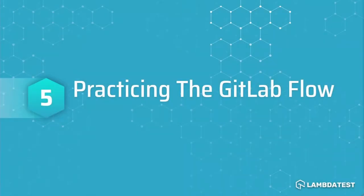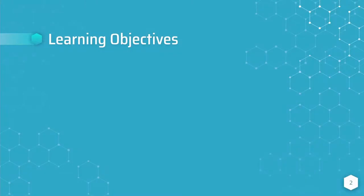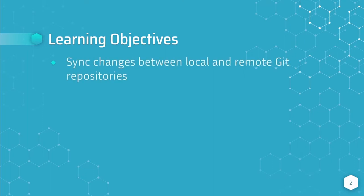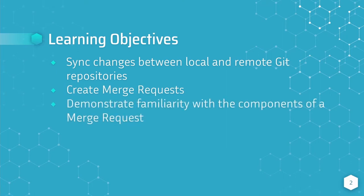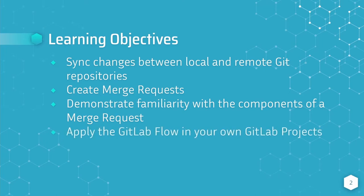Hey, what's up everybody, my name is Moss and welcome back to this tutorial series on GitLab. In the last video I introduced you to the concept of the GitLab flow, and in this video we are going to apply the GitLab flow to the project that we previously created, using the environment branches variation. After completing this video you should be able to sync changes between local and remote Git repositories, create merge requests, demonstrate familiarity with the components of a merge request, and apply the GitLab flow in your own GitLab projects.